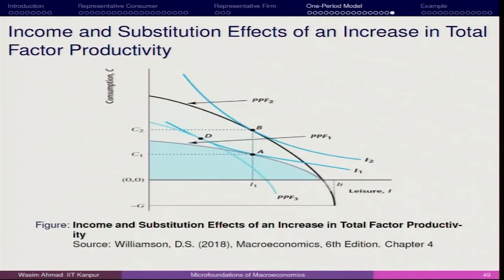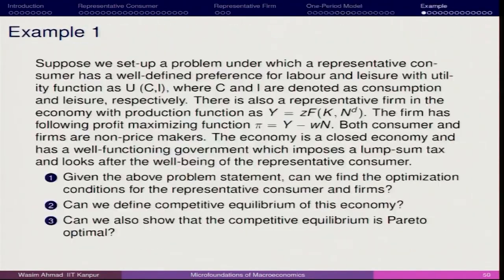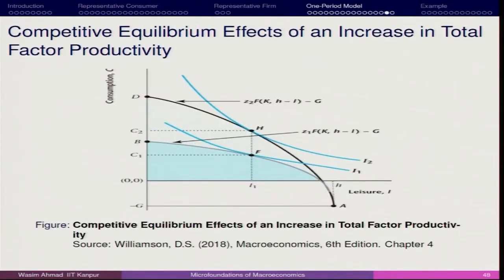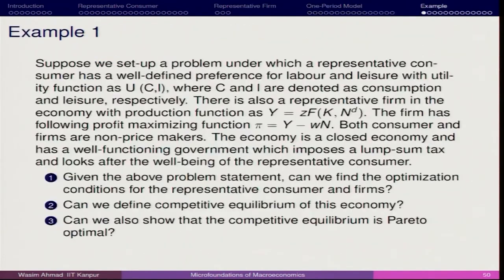This is how we have it — now we will be summarizing what we have done so far and talking about how to deal with certain examples. We can go for thinking about how to understand this with the help of certain examples. Suppose we have a representative consumer which has well-defined preferences for labor and leisure with utility function u(c, l), where c and l denote consumption and leisure respectively.